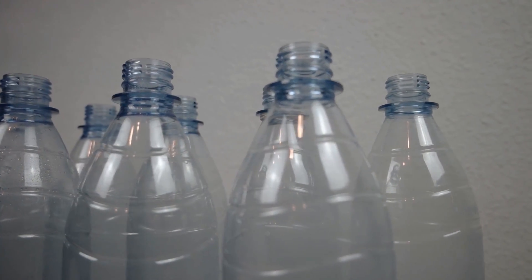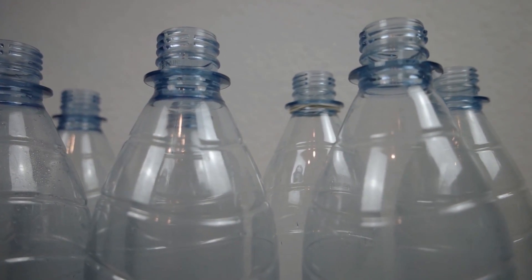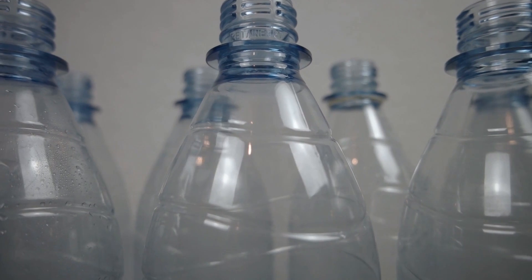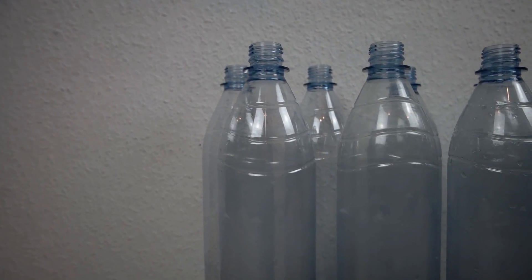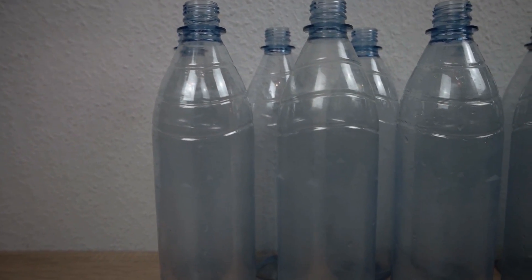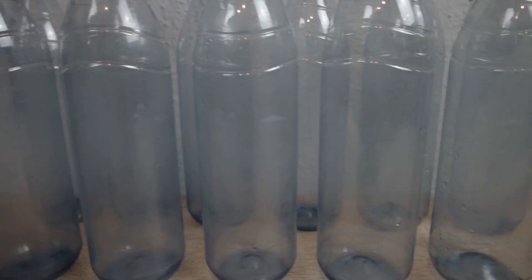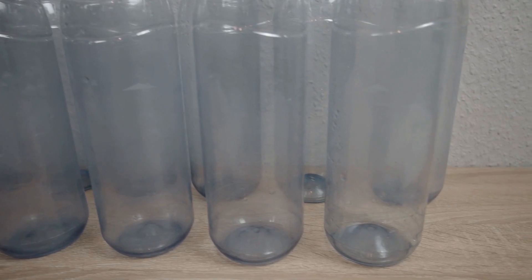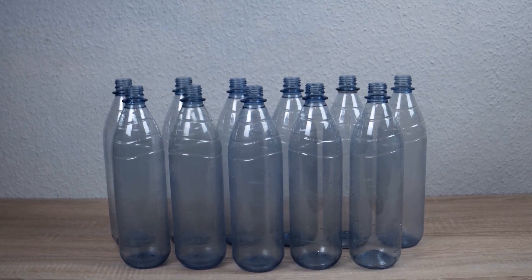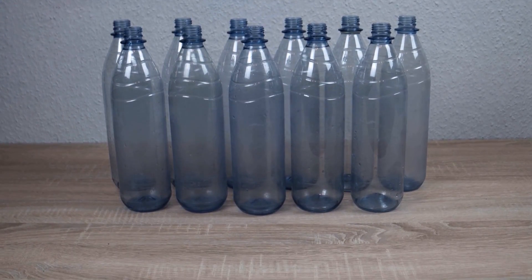Regardless which method of construction you go for, the principle of building the pressure vessel is always the same. Multiple plastic bottle sections are combined together. However, not all plastic bottles can be used for water rocketry. The bottles should be as strong as possible and should have a long cylindrical section. In this video we are using bottles from Apollinaris, but these bottles may not be available to you depending on your location.